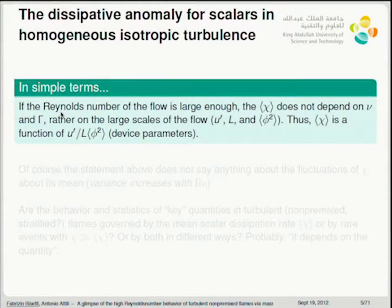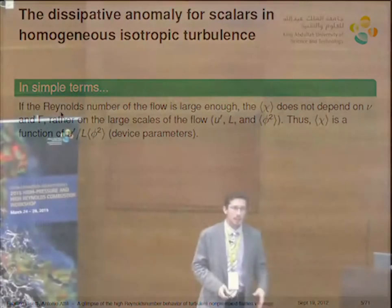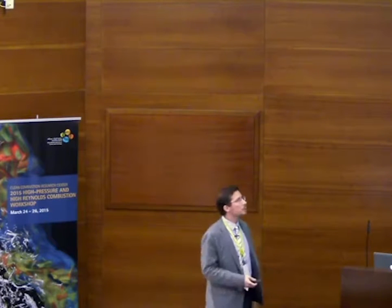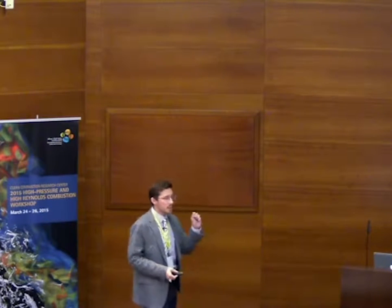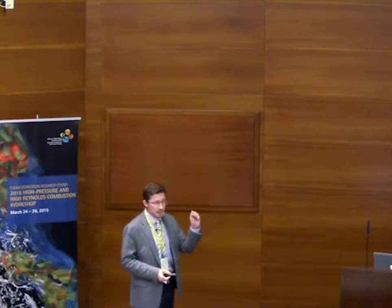In simple terms: if the Reynolds number is large enough, the mean scalar dissipation rate does not depend on nu and gamma. Rather, it depends on the large scales — U-prime, L, and the variance of the passive scalar fluctuation. Thus the mean scalar dissipation rate is a function of U-prime, L, and the variance. Those are device parameters — things you dial in by deciding how big your burner is or how much flow rate you use. These are quantities that experimentalists and DNS designers have control over.